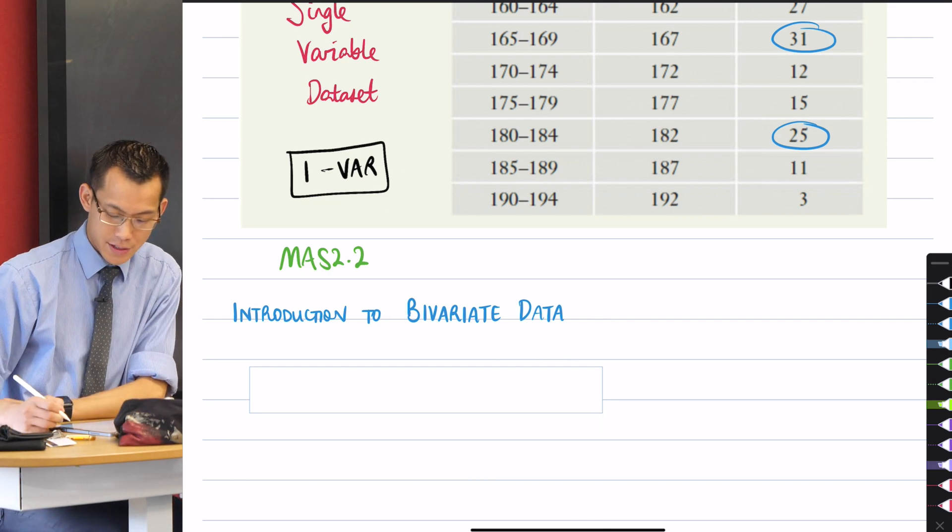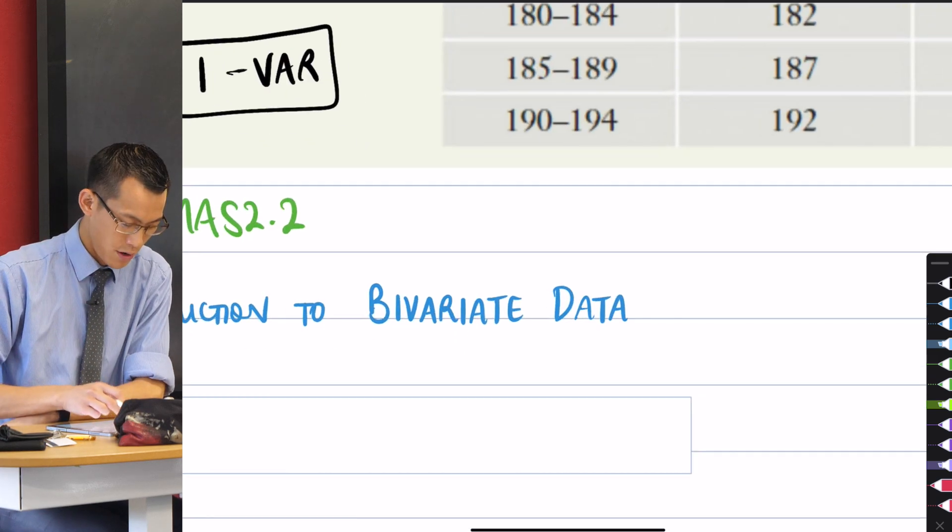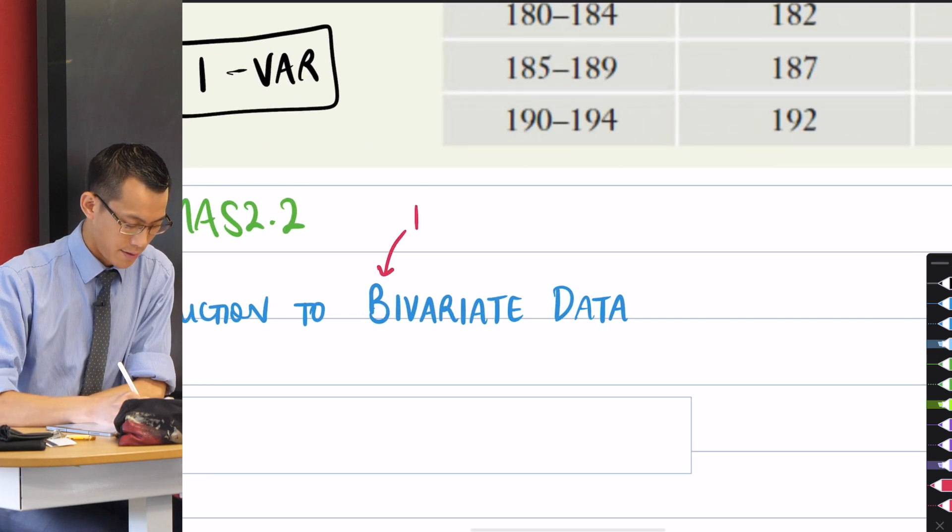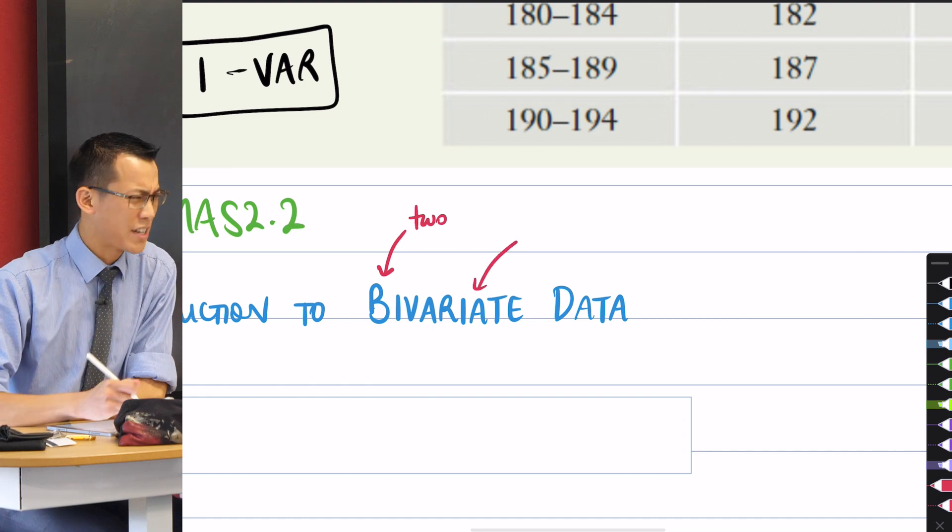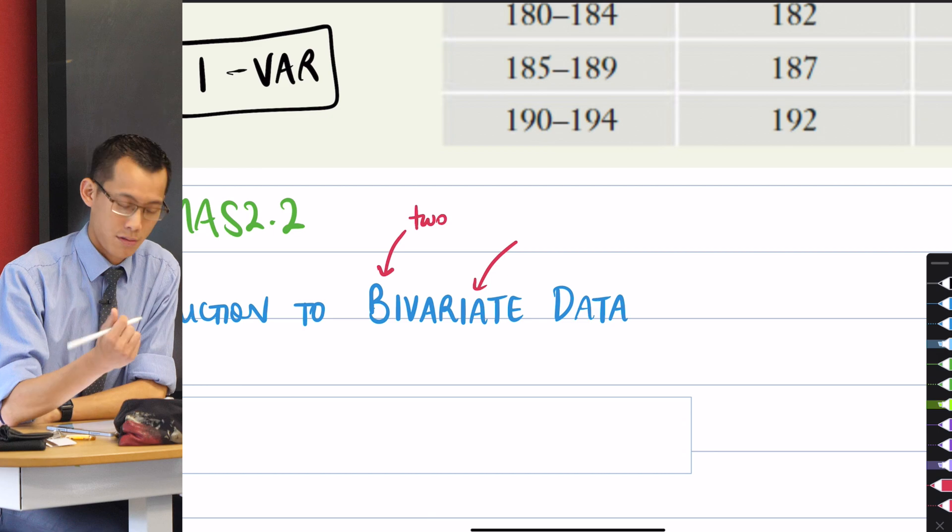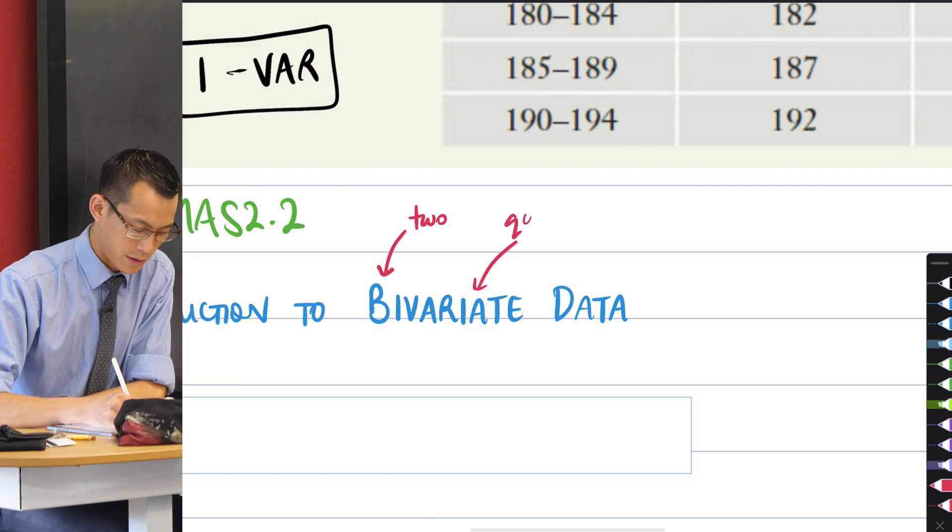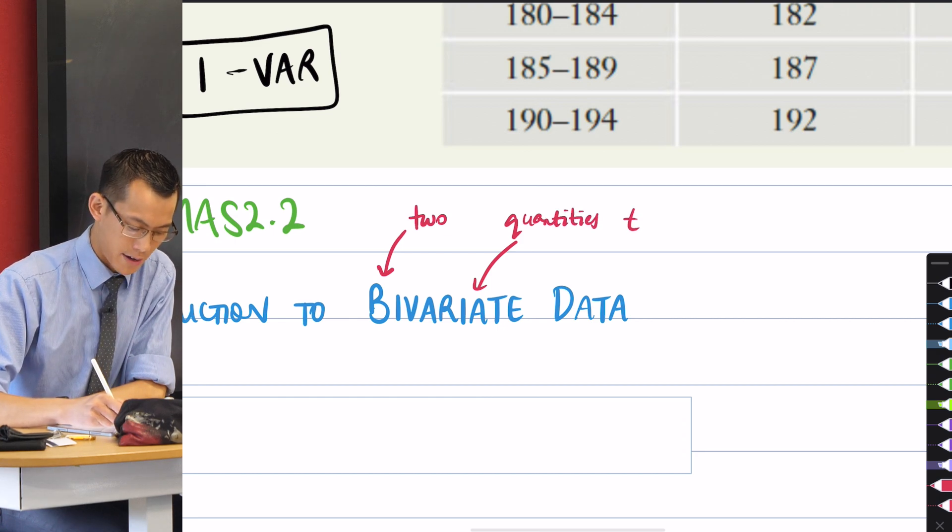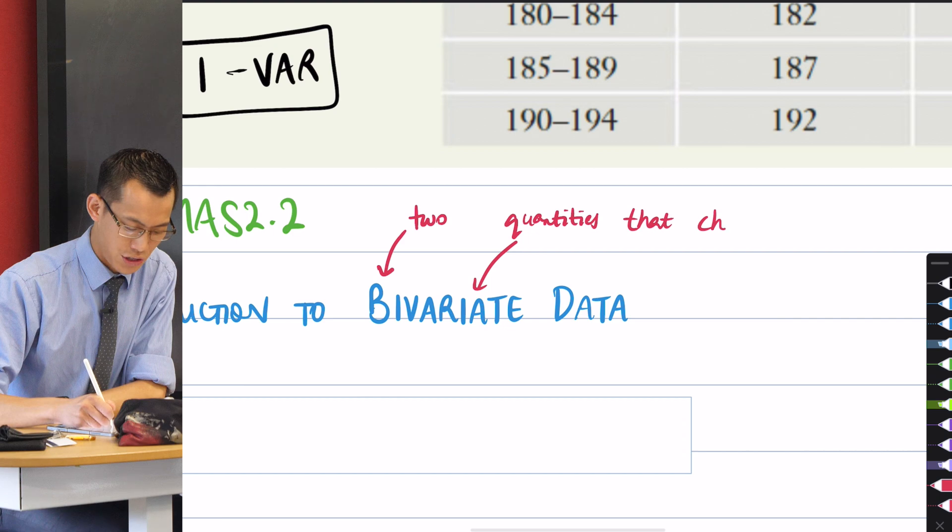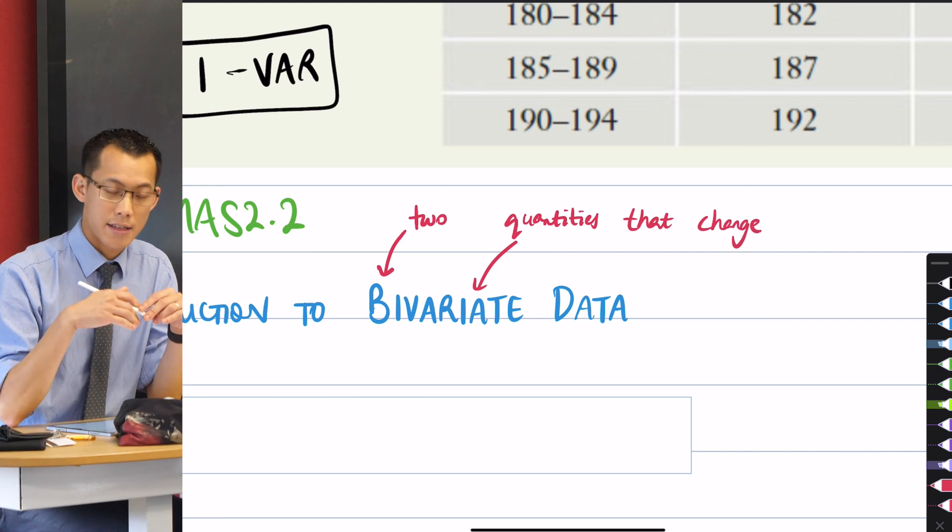We're in this section here where we're going to now look at Bivariate Data. Now, like the name suggests, it's a pretty simple idea. Instead of having just a single variable, we're interested in two. What is a variable, after all? It's just a quantity that changes, right?